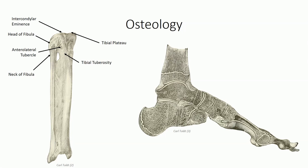We've already discussed the anatomy of the proximal tibia and fibula. This includes the tibial tuberosity and anterolateral tibial tubercle, also known as Gerdy's tubercle, for attachment of the quadriceps femoris and iliotibial band respectively. We previously observed the articulation at the knee with the medial and lateral tibial condyles and the intercondylar eminence. The proximal tibial-fibular joint, between the head of the fibula and the fibular articular facet, is a planar type synovial joint.